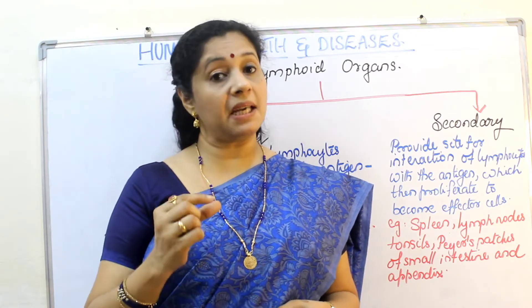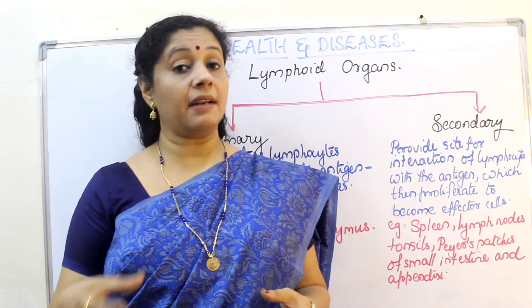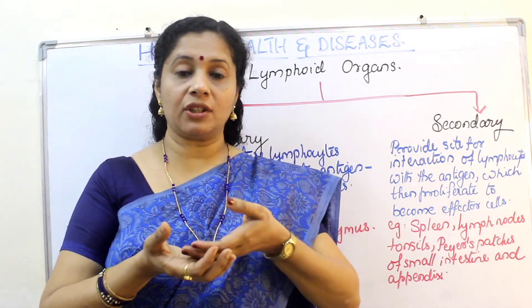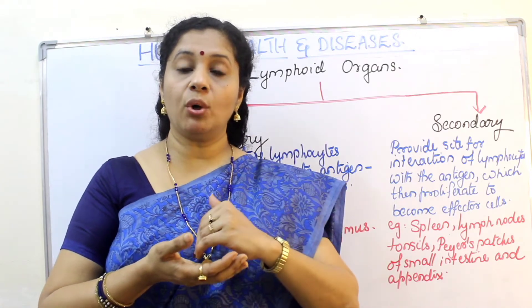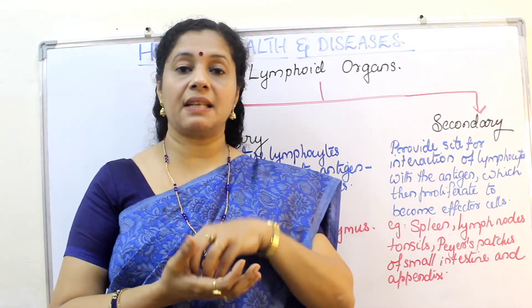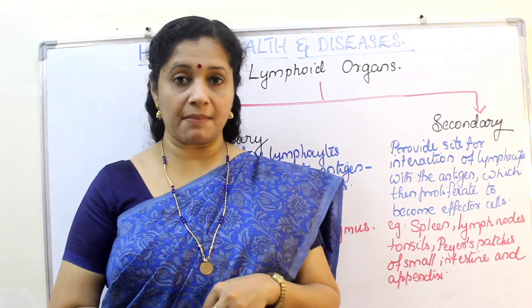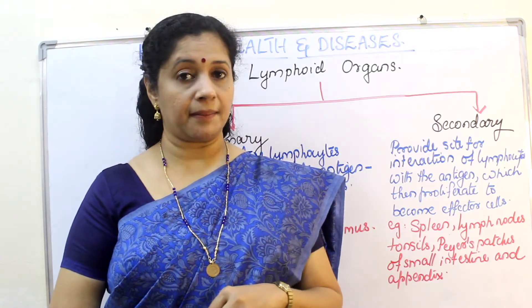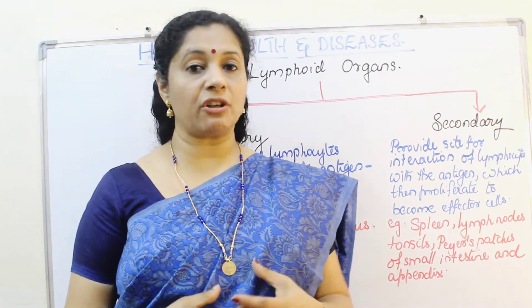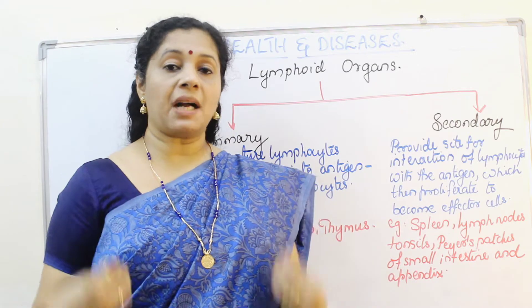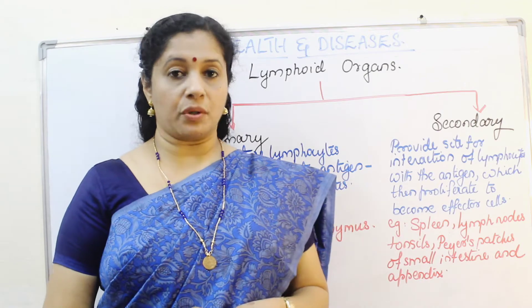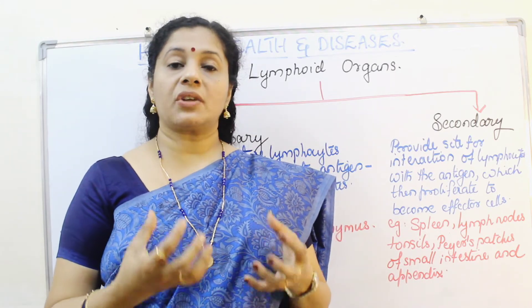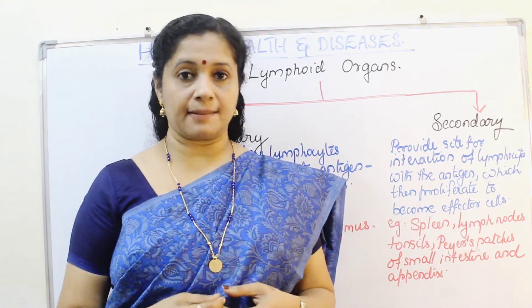The spleen is a large bean-shaped organ containing many lymphocyte cells and phagocytic cells. Phagocytic cells eat away microbes, so the spleen acts as a filter of blood — all blood-borne microbes are captured and destroyed by lymphocytes and phagocytes. The spleen is also known as the graveyard of RBCs because red blood cells have a lifespan of only 120 days and are destroyed in the spleen. Lymph nodes are small node-like structures in the lymphatic system that capture antigens trapped in the lymph or tissue fluid, triggering lymphocyte formation and immune response.